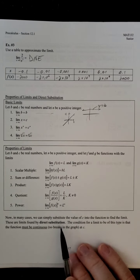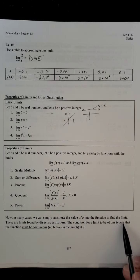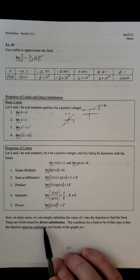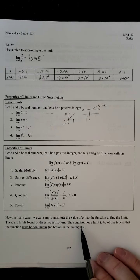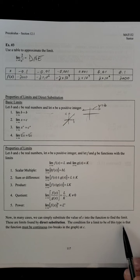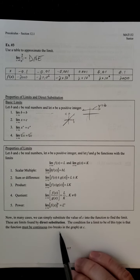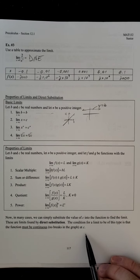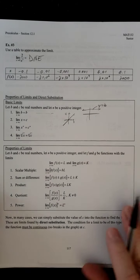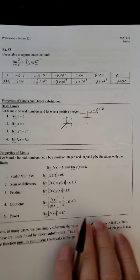Now, in many cases, we can simply substitute the value of c into the function to find the limit. These limits are found by direct substitution. The condition for a limit to be of this type is that the function must be continuous. No breaks in the graph at c.